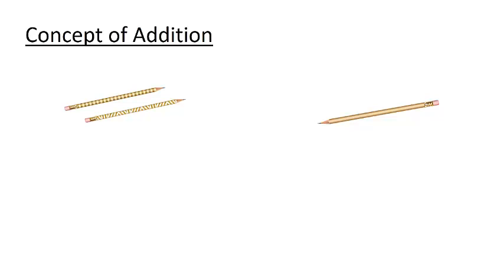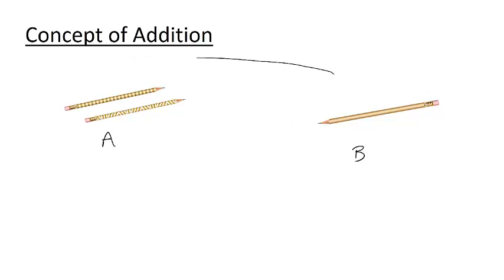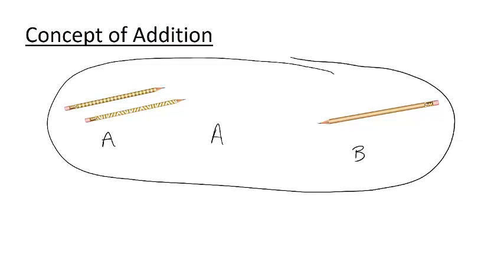The concept of addition can be linked to cardinality of sets. Suppose we have two sets, A and B, and we know how many objects are in each set. What if we want to combine all of these objects together into one large set? Well, there are two objects in the first set and one object in the second set, so in our union there will be three objects.